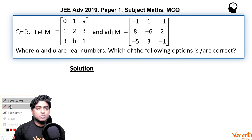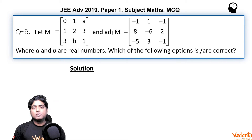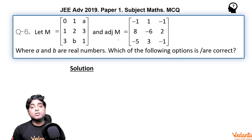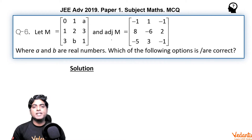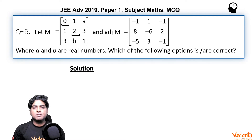In order to get the values of A and B: adjoint M is the transpose of the matrix of cofactors. But if you find the cofactors of diagonal elements, they are placed at the same position. So we will find the cofactors of 0 and 2 to get the values of A and B. The cofactor of 0 would be −1, and the cofactor of 2 would be −6.